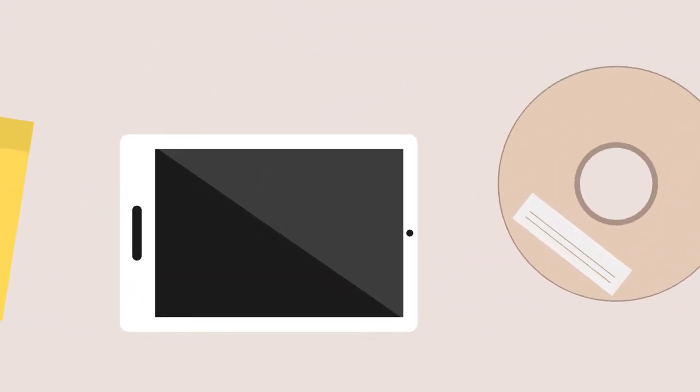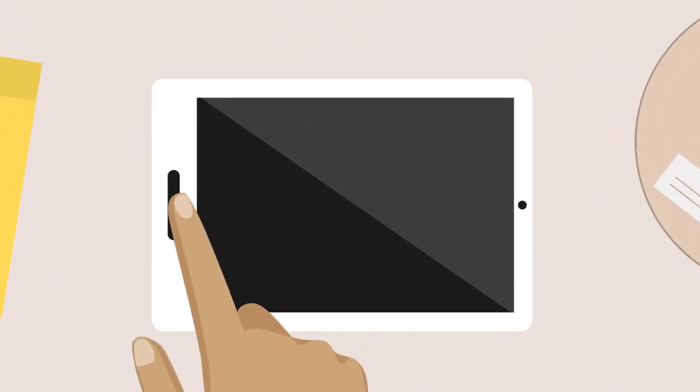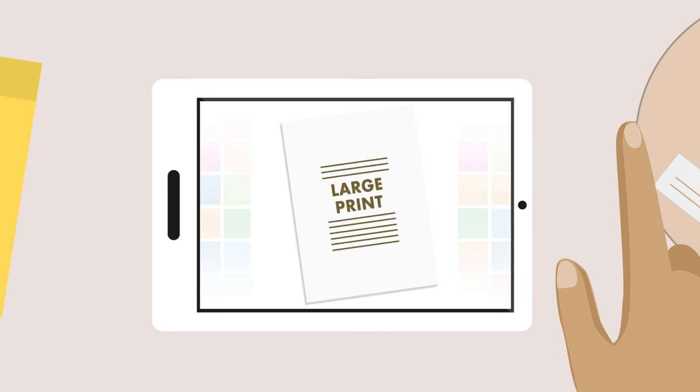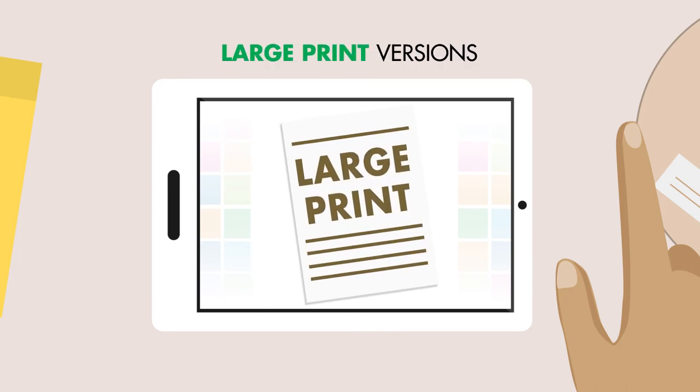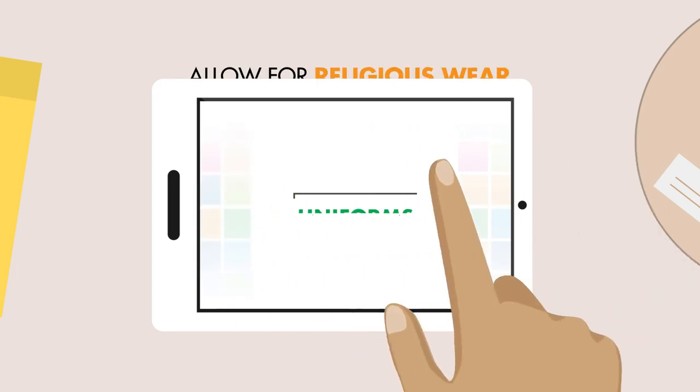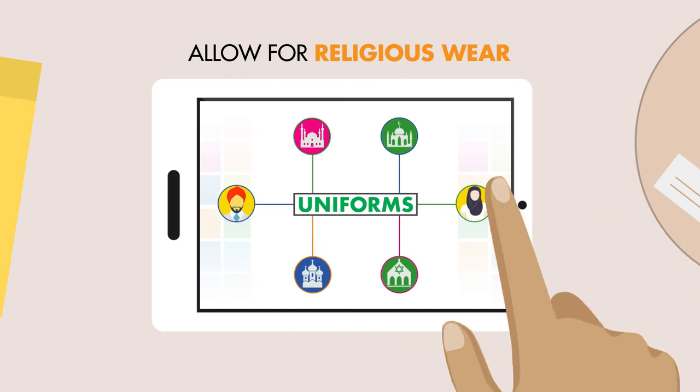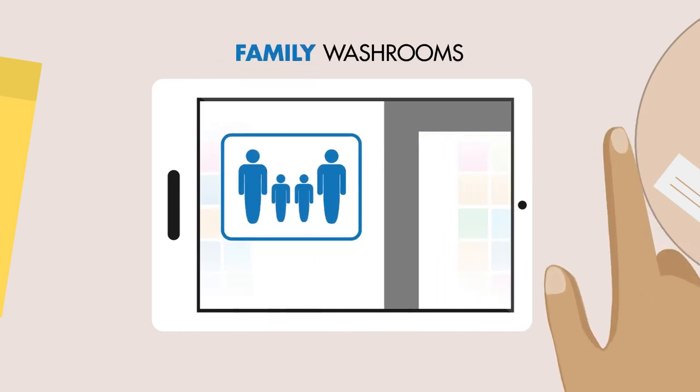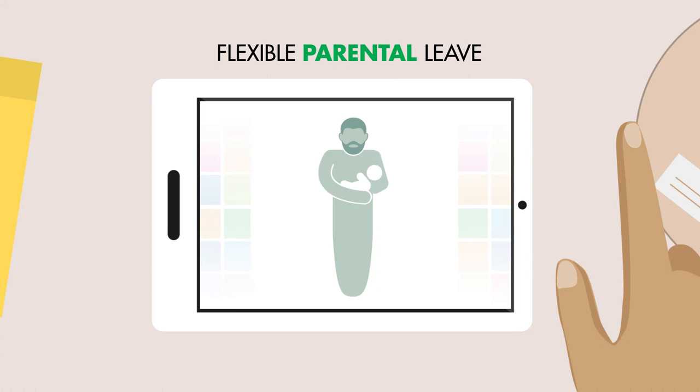Many benefit from removing barriers for groups of people. Consider large print versions of documents for the visually impaired, uniforms that allow for religious wear, family washrooms for parents with young children, and flexible parental leave policies.